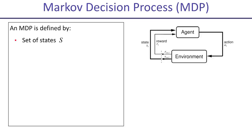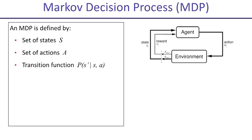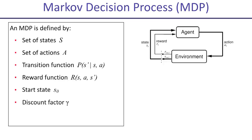Let's formalize this and make sure we all have the same notation in mind. An MDP — Markov Decision Process — is defined by a set of states, capital S. For a Mujoco simulated robot, the state could be a vector with joint angles, joint velocity, and coordinates and velocity of the center of mass. There's a set of actions — for example, the torques going to each motor. There's a transition function that gives a distribution over next states S prime given current state and action — this doesn't need to be deterministic, it's often stochastic. There's a reward function: if you're in state S, took action A, and landed in state S prime, how much reward do you get? You start in some start state S_0. There's a discount factor gamma, which says how much you care about the future compared to the current time.